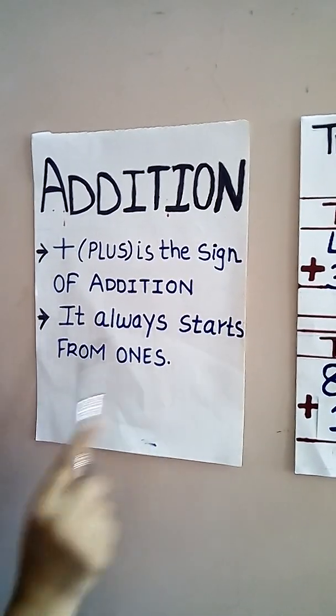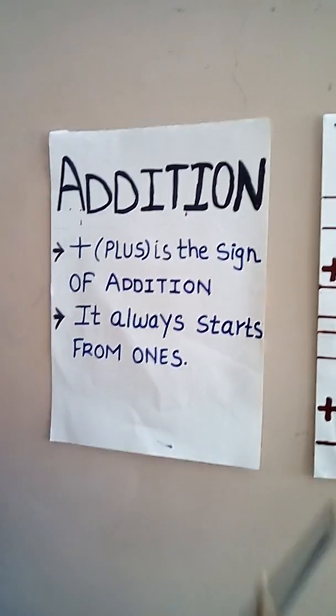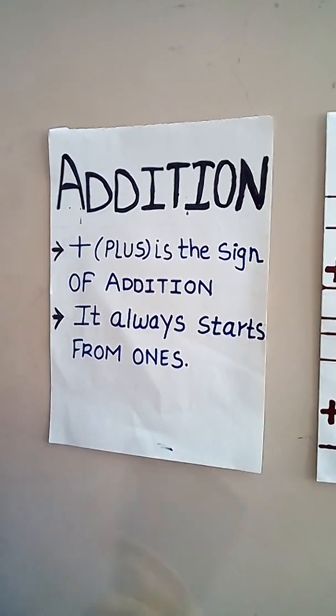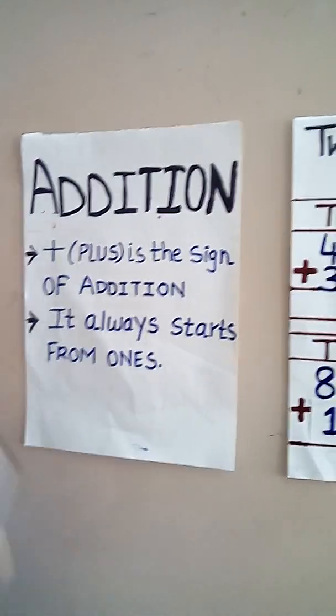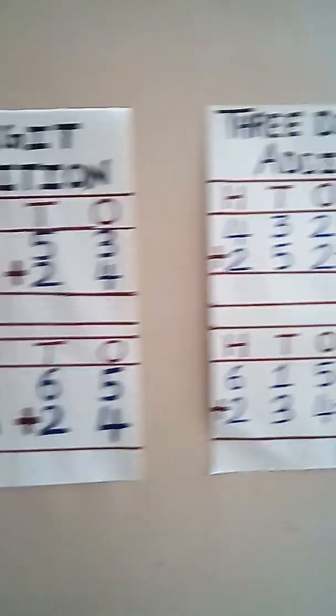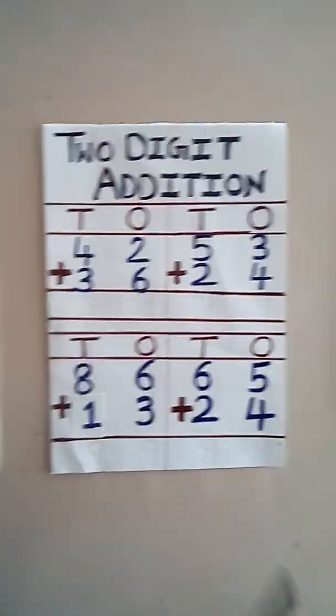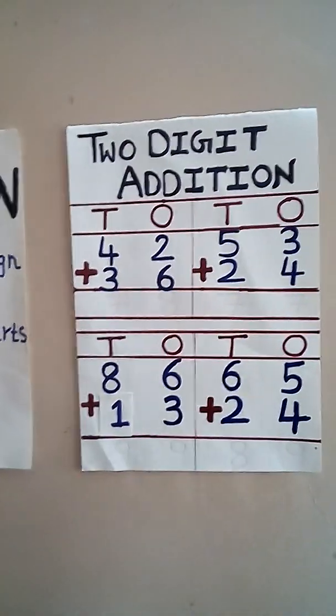It always starts from ones — means from the back side it starts. Now today we are going to do two-digit addition and three-digit addition. So first of all we do two-digit addition.